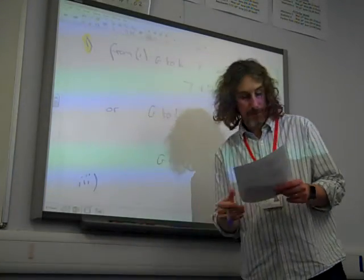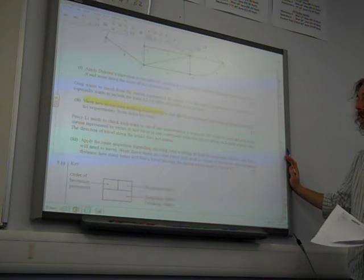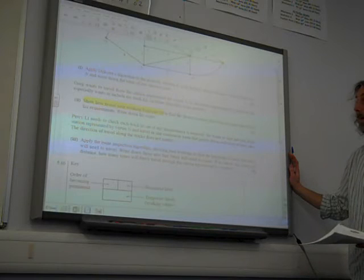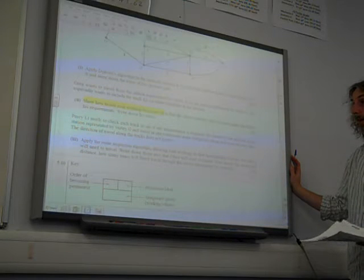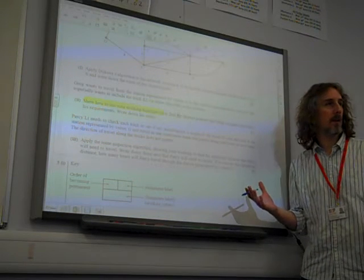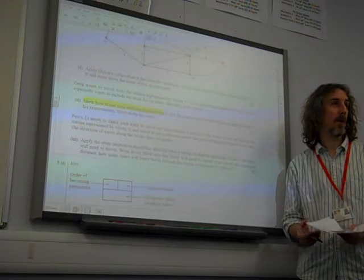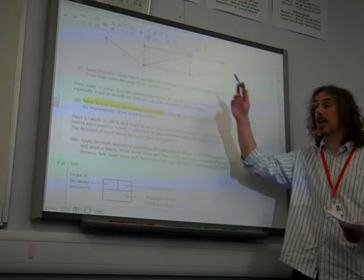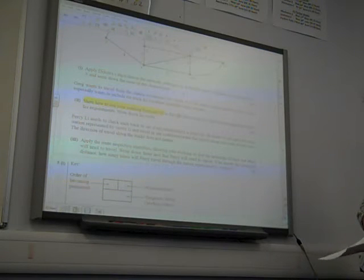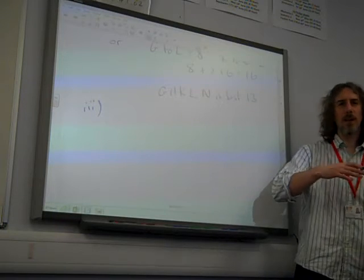Part three. Now, it's turned into something else now, hasn't it? The question now says, Percy Lee needs to check each track to see if any maintenance is required. It's an important job. He wants to start and end at the station representing by vertex G, and travel in one continuous route, passing each track at least once. This is traveling... It's not. It's route inspection, isn't it? It's a Chinese post-person problem. Post-person. Because he needs to travel along every single route at least once. It's exactly that problem. Apply the route inspection algorithm. I'm sure you're working. Right. So, route inspection algorithm. We know this. You're just following it step by step now.